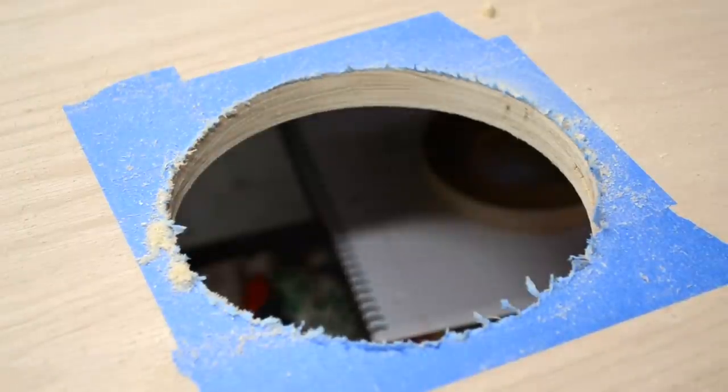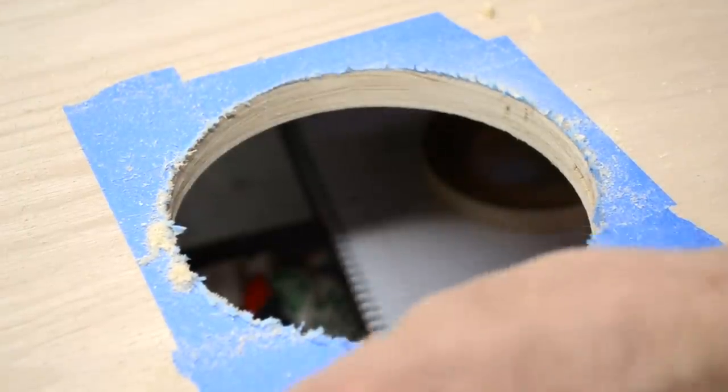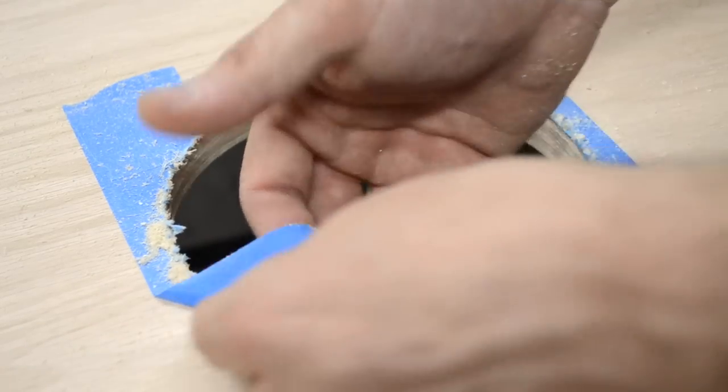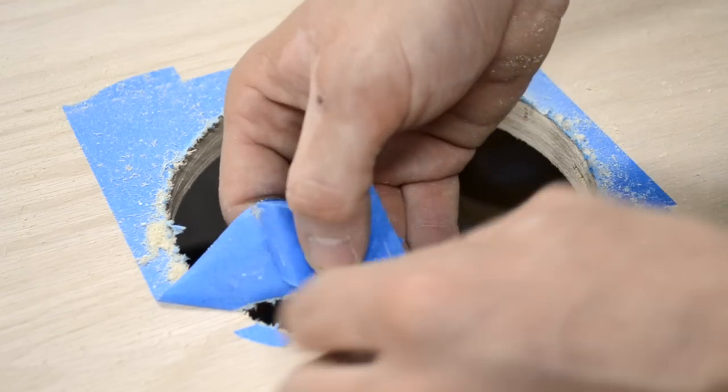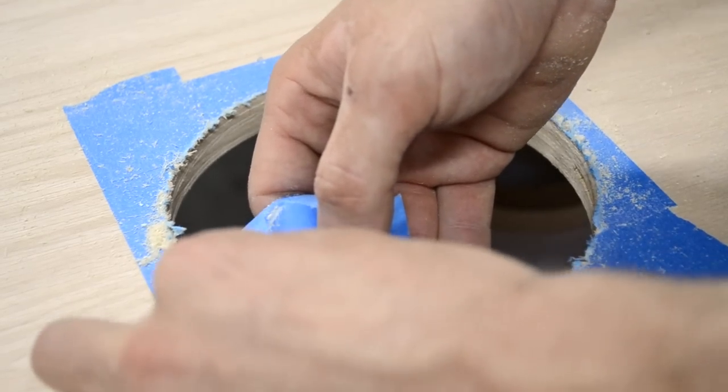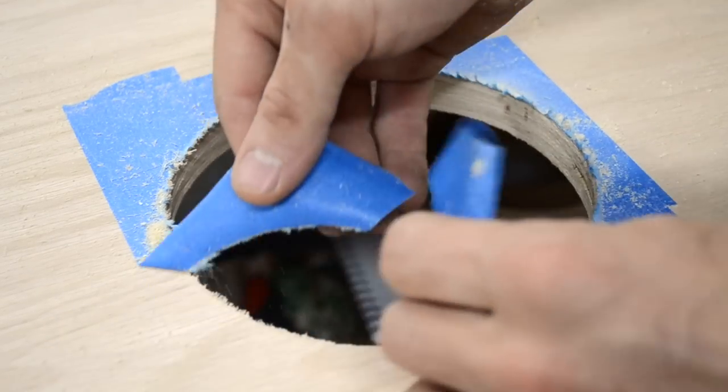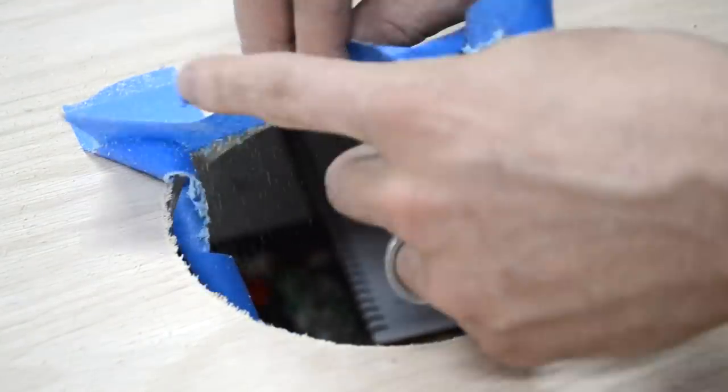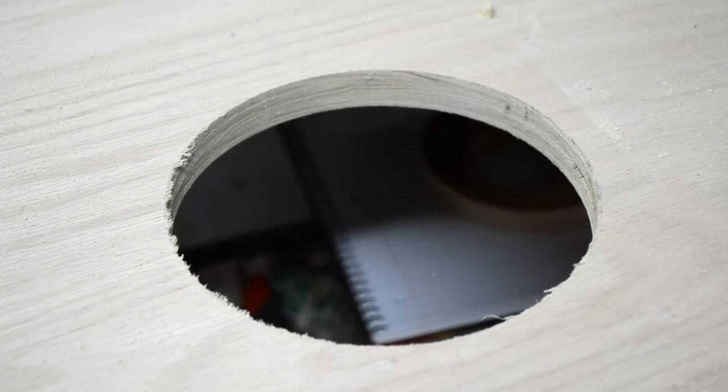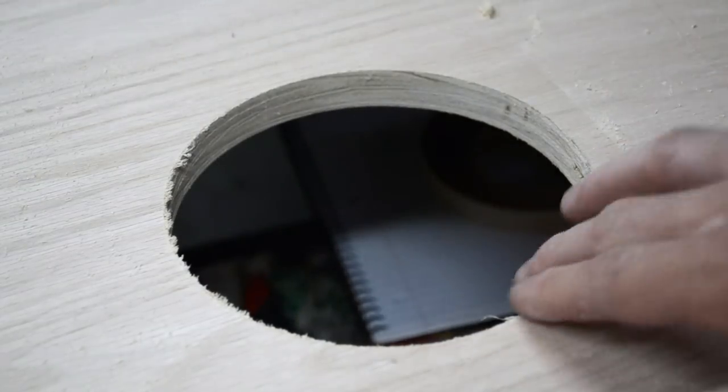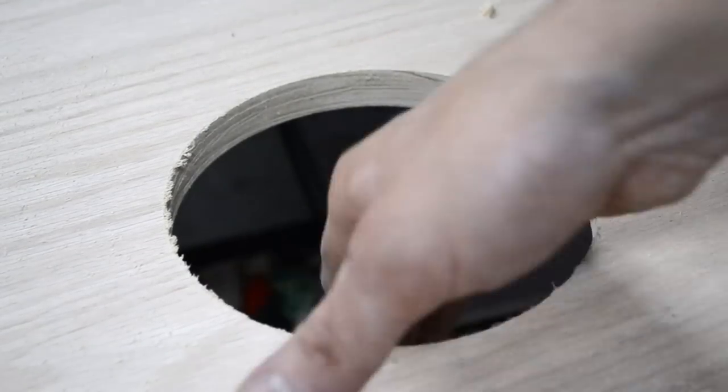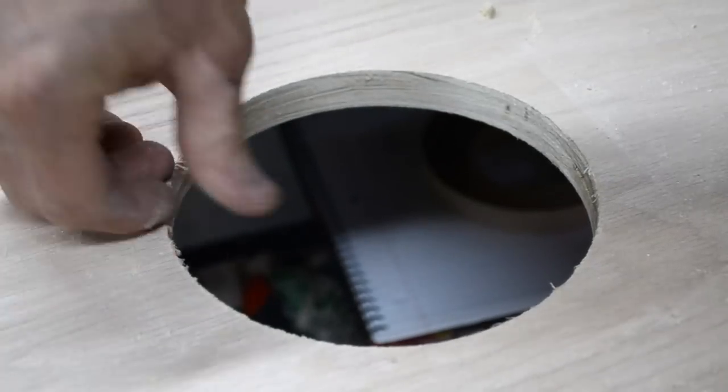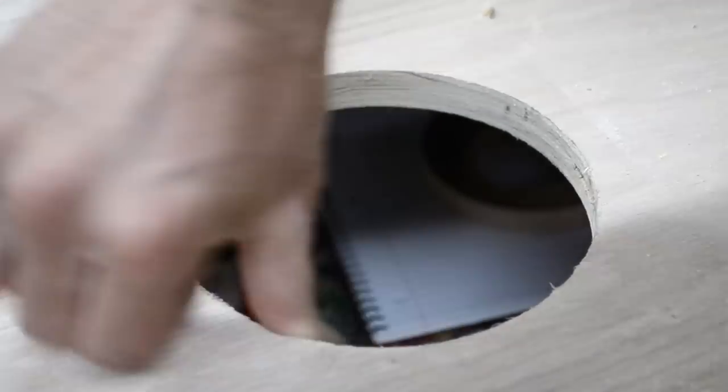I just finished cutting the hole. You'll be able to see why I use the Jasper circle jig and why I use the tape. Just with a small amount of sanding, all these little loose pieces will come right off and it'll look perfect.